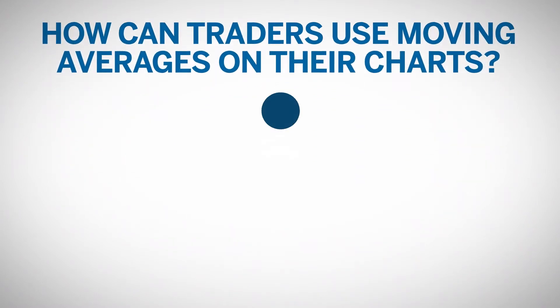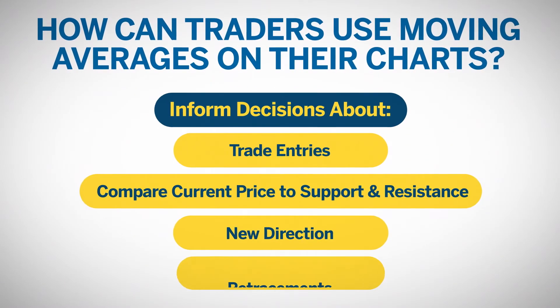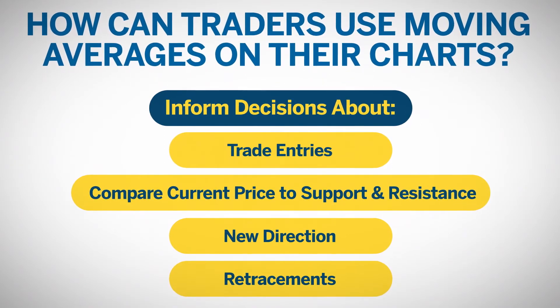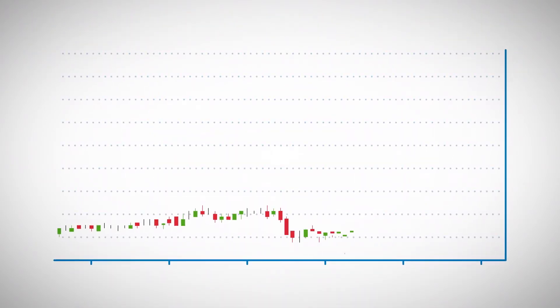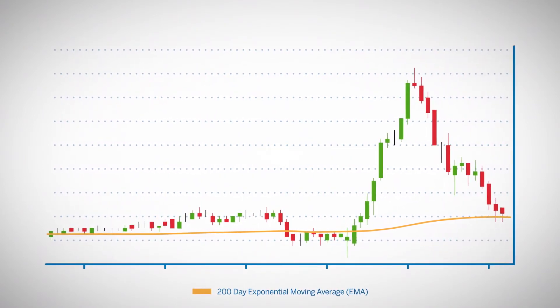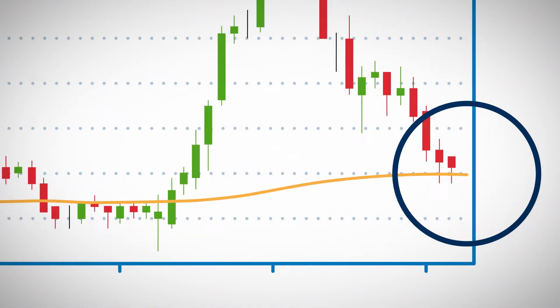Moving averages are often used to compare where the current price of the underlying instrument is in relation to support and resistance as shown by the moving average lines on a chart. When price moves down to a moving average line or up to a moving average line, traders can use this as a signal that price might stop or retrace at that point.